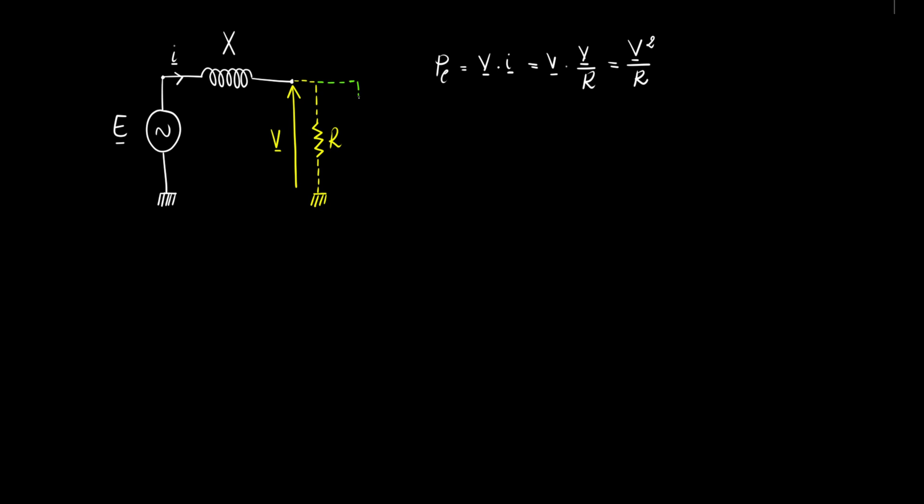But when your neighbor switches his light on, he's essentially connecting another identical resistance in parallel with yours. Now, the electrons have two equally resistive paths, halving the total resistance and consequently doubling the electrical power. So, the extra power your neighbor gets is just a result of good old Ohm's law at work. Electrons always choosing the easiest paths, just like most of us, I guess.